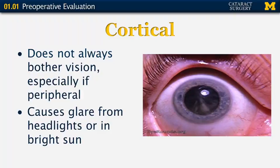A cortical cataract is slightly different — it's kind of a white fluffy material in the cortex of the lens. If the cortex is cloudy in the peripheral portion, it doesn't often affect vision. But if it's more central, it can certainly cause glare from headlights or in bright sunlight.